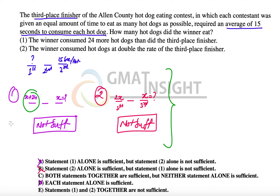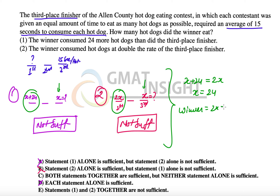Combining both statements: Statement 1 gives us that the winner ate x plus 24 hot dogs, and Statement 2 gives us that the winner ate 2x hot dogs — where x is the number eaten by the third place finisher. Setting these equal: x plus 24 equals 2x, which gives us x equals 24. Therefore the winner ate 2x, which equals 48 hot dogs. The two statements together are sufficient, and the final answer is option C.